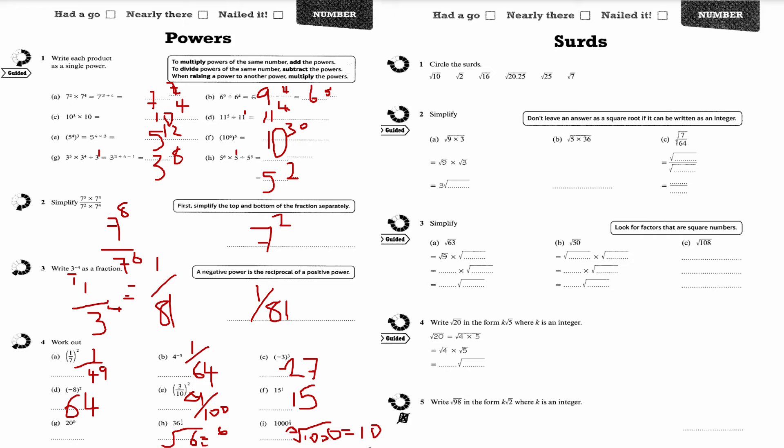This is question number 1 on the third section. Circle the surds. It's the square roots that don't give me a whole number answer. Root 10 is a surd, root 2 is a surd. Root 16 gives me the answer of 4, so that's not a surd. Root 25 gives me 5. Root 7 is a surd. This one I don't believe so, because I can write it as an improper fraction. 20 and a quarter, which becomes 81 over 4, which becomes 9 over 2.